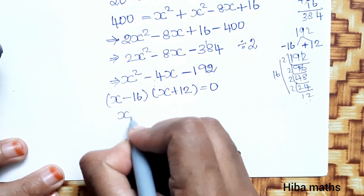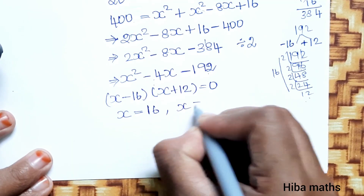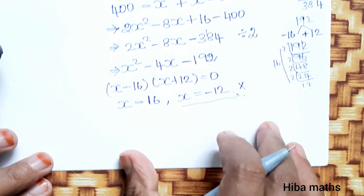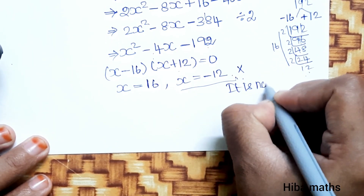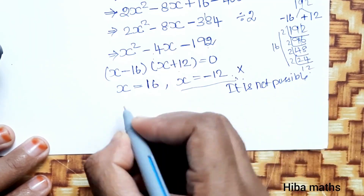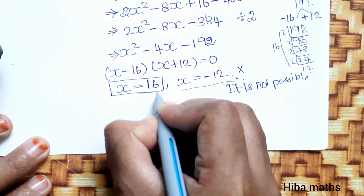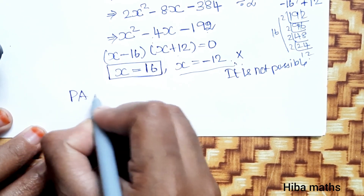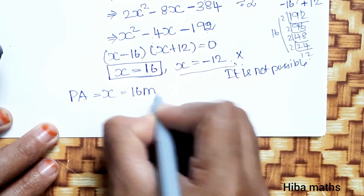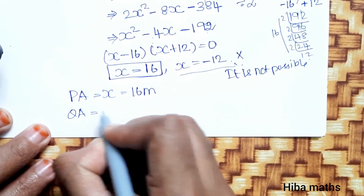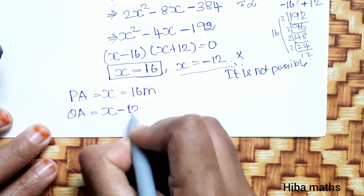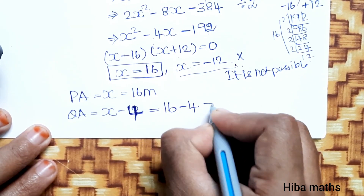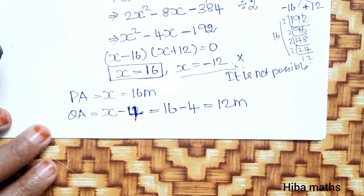From the factorization, x equals minus 16 or x equals plus 16. Also, x equals plus 12 or x equals minus 12. Since negative distance is not possible, x equals 16. So PA equals 16 meters. QA equals x minus 4, which is 16 minus 4, equals 12 meters.